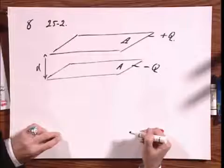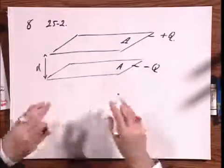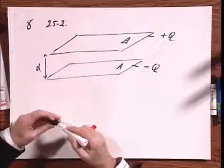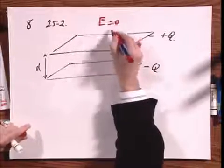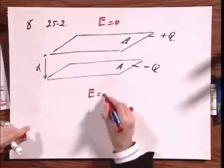Well the electric field outside these huge plates is going to be zero and I want you to prove that using Gauss's law. E is zero here and E is zero there.